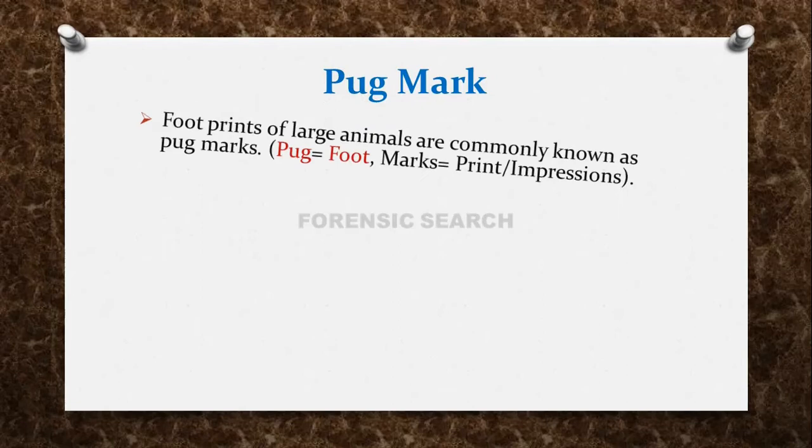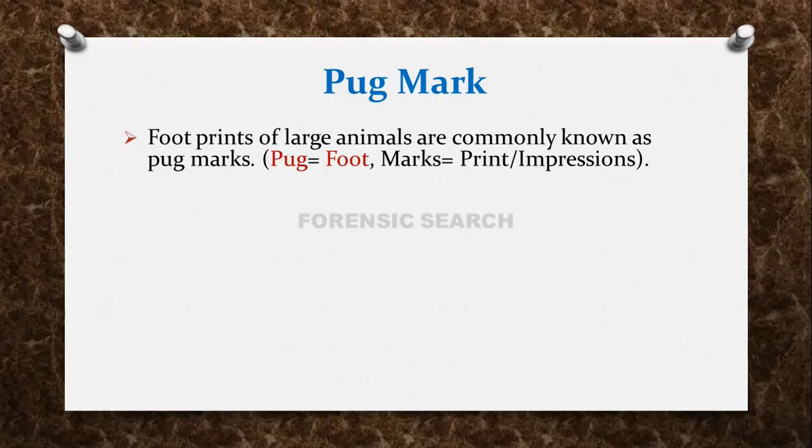Footprints of large animals are commonly known as Pugmarks. If we divide the word Pugmarks, 'Pug' means foot and 'marks' means print or impression. That means whatever large animals there are, their footprints are called Pugmarks.